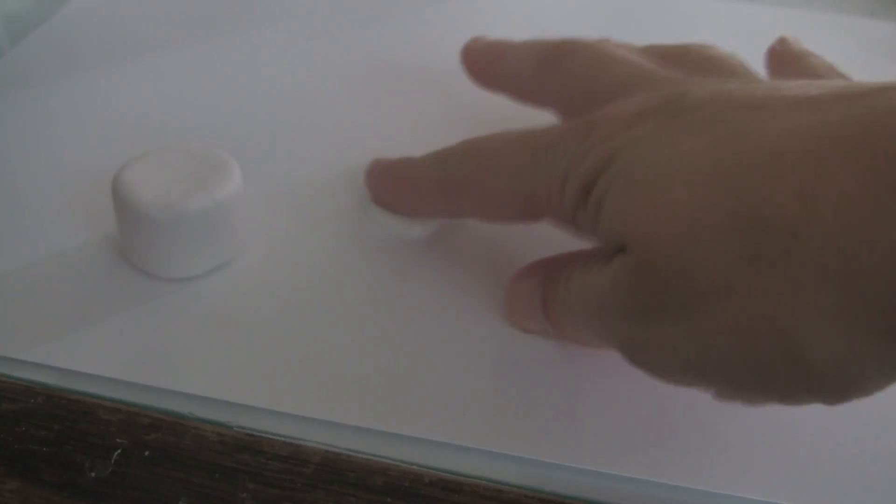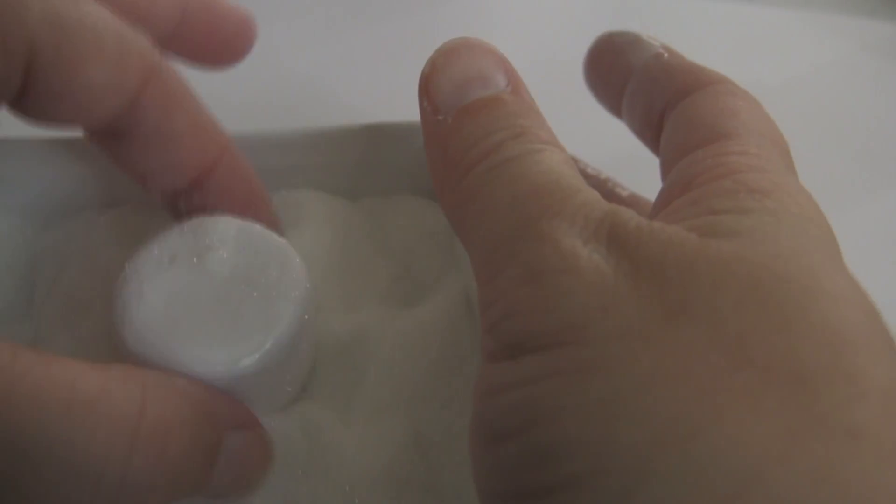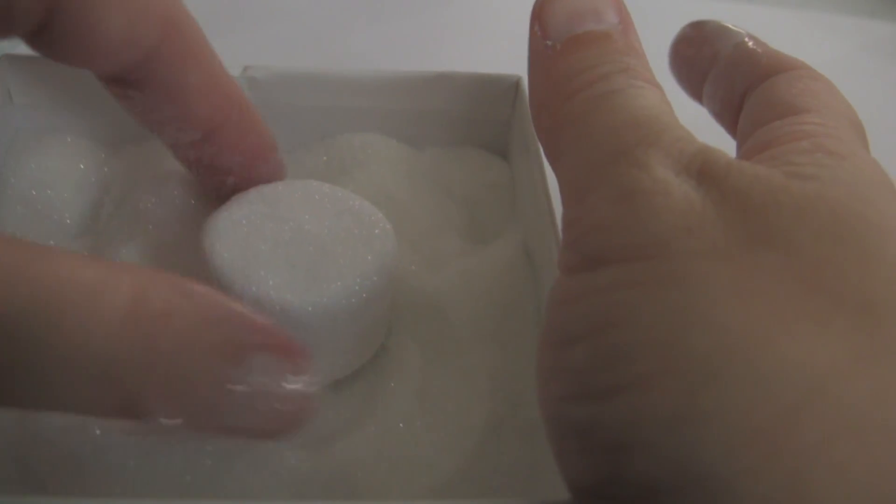From here I have Martha Stewart Clear Fine Glitter. I put some on my fingers, rub my fingers together, then I toss the cake in my fingers until I get a nice thin sticky layer all over my cake. Roll it back and forth, flip it on its other side.